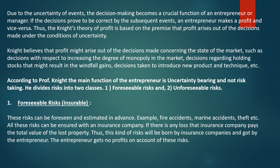Knight believes that profit might arise out of decisions made concerning the state of the market — such as decisions to increase the degree of monopoly in the market, decisions regarding holding stock that might result in windfall gains, or decisions taken to introduce a new product and technique. According to Professor Knight, the main function of the entrepreneur is uncertainty bearing and not risk taking.